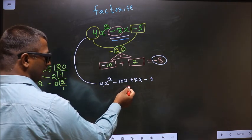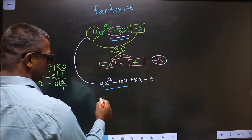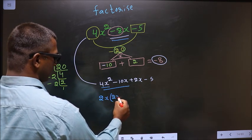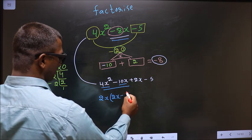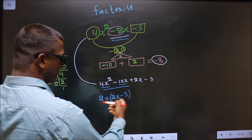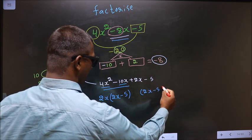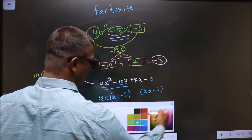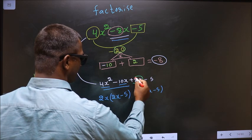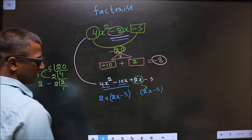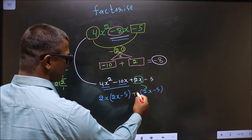Now, what can you take out common from these two terms is 2x. So here you get 2x and here you get -5. Whatever you got here, here also you should get the same thing. From this entire expression, 2x has gone inside, so outside you are left with +1.